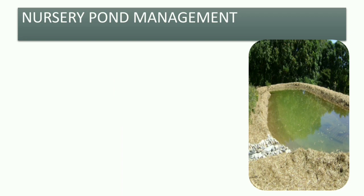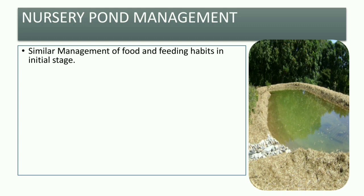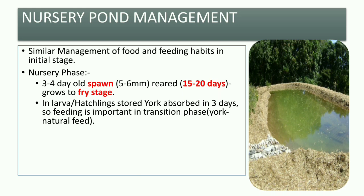Nursery pond management involves similar food and feeding habits in the initial stage. In the nursery phase, 3 to 4 days old spawn measuring 5 to 6 mm is reared for 15 to 20 days until it grows to fry stage.